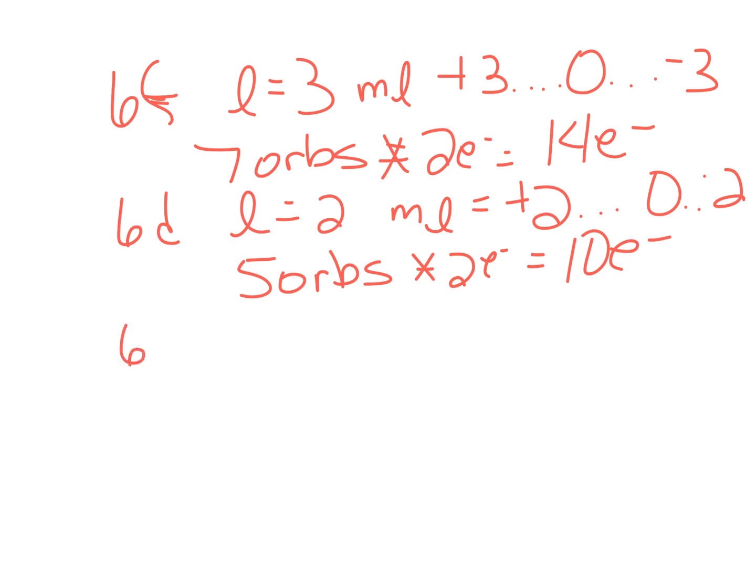There is 6p. l is equal to 1. m sub l is equal to plus 1, 0, or minus 1. So that gives me 3 orbitals, and 2 electrons per orbital gives me 6 electrons.